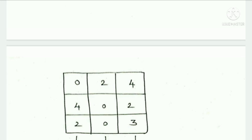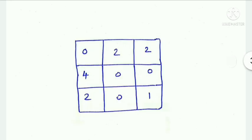After column reduction: the first column minimum value is 0, the second column minimum value is 0, and the third column minimum value is 2. The second column values become 1, then 0, then 1 after subtraction.